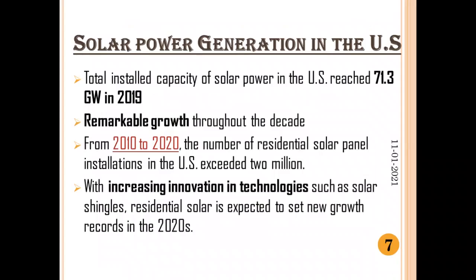The total installed capacity of solar power in the US reached 71.3 GW in 2019. It was also the best year in history for residential solar, which has experienced remarkable growth throughout the decade. From 2010 to 2020, the number of residential solar panel installations in the US has exceeded 2 million. With increasing innovation in technologies such as solar shingles, residential solar is expected to set new growth records in the 2020s.